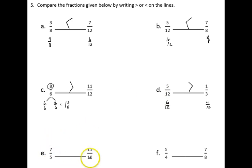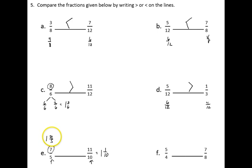To compare 7 fifths and 11 tenths, I can use the logic again that 7 fifths tells me this fraction is greater than 1 whole. 11 tenths is also greater than 1 whole. 11 tenths could be thought of as 1 and 1 tenth. 7 fifths is the same as 1 and 2 fifths. If I think in terms of the size of my fractions, 1 fifth is greater than 1 tenth, so 2 fifths has to be greater than 1 tenth. That tells me that 7 fifths is greater than 11 tenths.